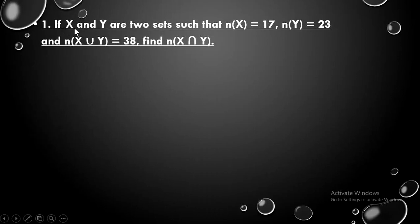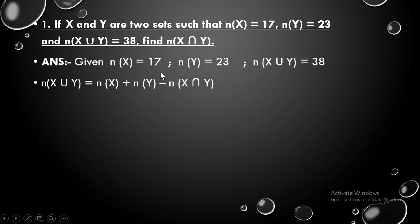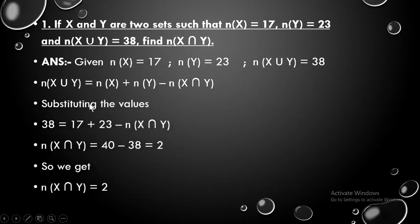The first question says: if X and Y are two sets such that the number of elements of X is 17, that of Y is 23, and X union Y is 38, we need to find the number of elements of X intersection Y. You just put the values into the formula, and when you substitute and calculate, you get that X intersection Y is 2.